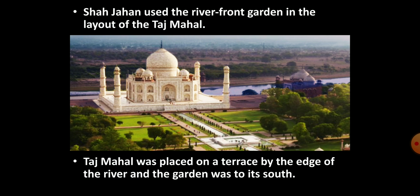As you know, Shah Jahan constructed the beautiful building considered one of the seven wonders of the modern world - the Taj Mahal. In the layout of the Taj Mahal, Shah Jahan adapted the riverfront garden concept. The Taj Mahal was placed on a terrace at the edge of the river Yamuna, and the garden was to the south, as is clearly visible in the image given here.